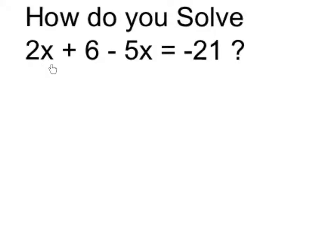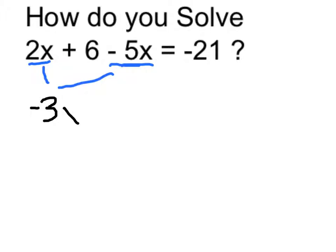Solving this equation means we need to find the value of x which slots into both of these places to make the overall equation true. So I'm going to combine like terms and simplify. If I have 2x to begin and then a minus 5x, in total that's 2 minus 5, or negative 3x.